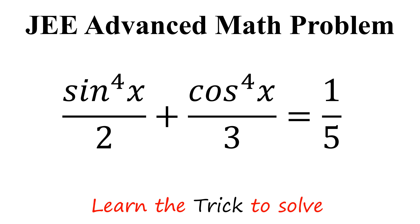Hi everyone! In today's video, we are going to solve this question. The question is sine to the power 4x divided by 2 plus cosine to the power 4x divided by 3 is equal to 1 over 5.